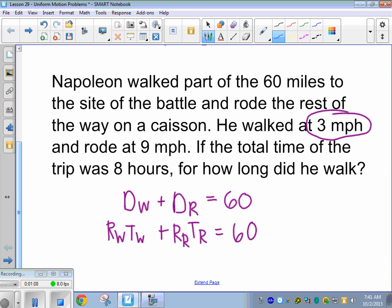He walked at 3 miles per hour. What do we plug the 3 in for? Yep, rate walking. And he rode at 9 miles per hour. What do we plug that in for? Sam. Good. Rate riding. Okay. Total time of the trip was 8 hours. That's a separate equation, right, that we write up to the side. So the time walking plus the time riding has to be 8 hours.